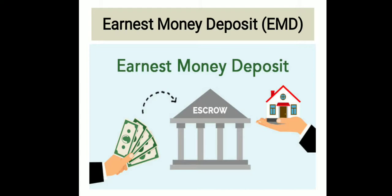Earnest Money Deposit: When the contractor submits the tender for a work, he has to deposit some amount, usually about 2% of the estimated cost, to the department as a guarantee of the tender. If the contractor refuses to take up the work when his tender is accepted, his earnest money is forfeited.